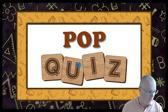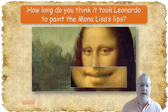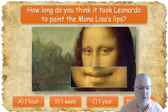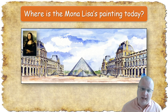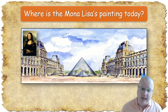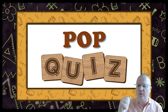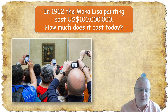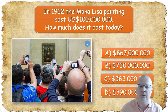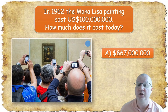Pop quiz: how long do you think it took Leonardo to paint the Mona Lisa's lips? Give students four choices — the correct answer is D, 10 years. Next question: where is the Mona Lisa today? See if they recognize the museum, then show the answer — it is in the Louvre Museum in Paris. One more interesting fact: in 1962 the Mona Lisa cost 100 million dollars. How much does it cost today? The correct answer is A — 867 million dollars, nearly a billion.